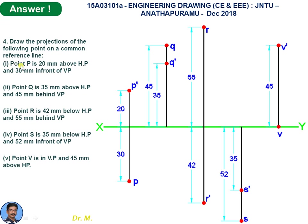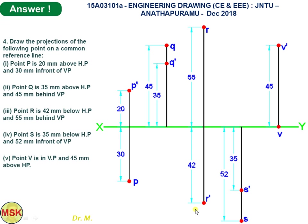Point P: 20 above HP, 30 in front — P' is 20 above XY, P is 30 below XY. Point Q: 35 above, 45 behind. Point R: 42 below, 55 behind. Point S: 35 below HP.